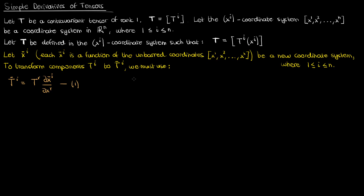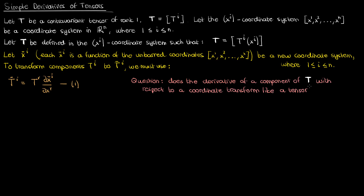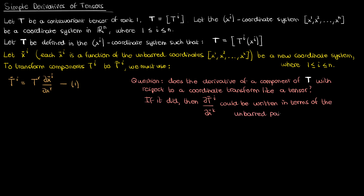Now we want to differentiate the tensor component of t with respect to some unbarred coordinate — that is, I want to find the rate of change of the tensor component as we change some unbarred coordinate. The purpose behind this differentiation is to answer the question: does this derivative transform like a tensor? If it did, that would mean if I change coordinates from the unbarred system to the barred system, the derivative of t super i bar with respect to the barred coordinate x super k could be written in terms of a tensor transformation law. After all, if some quantity is to be a tensor, it must transform like a tensor via a corresponding tensor transformation law.